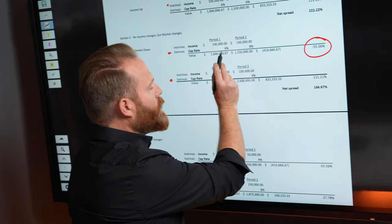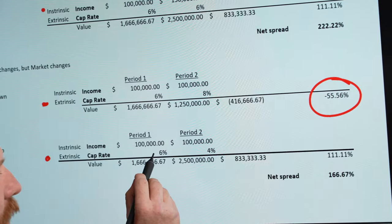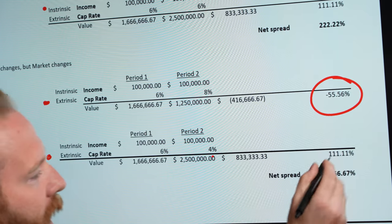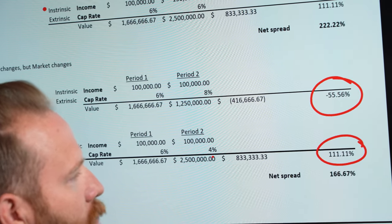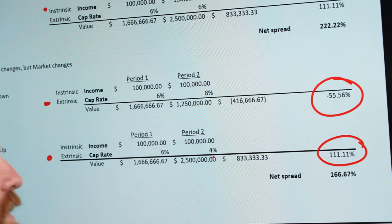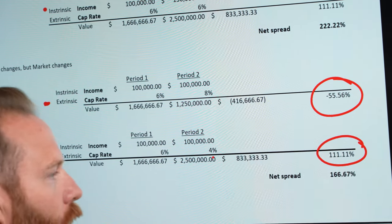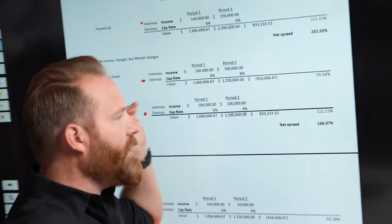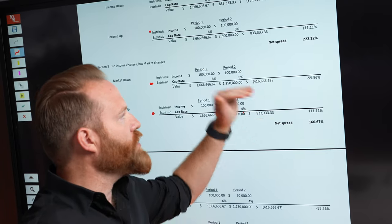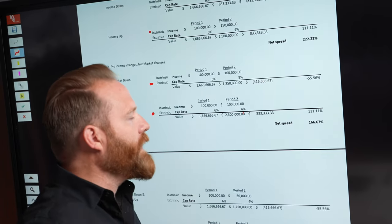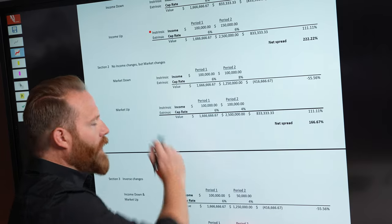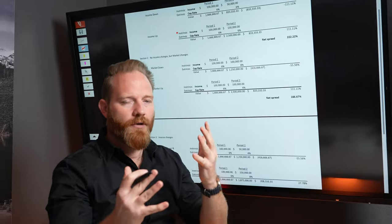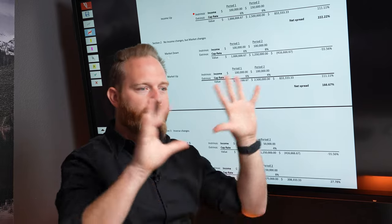So prices go up, cap rates go down at the same level, except inverse 6 to 4. So you went from a 6 cap to an 8 cap, and then a 6 cap to a 4 cap on this one. That is 111%. Now what's interesting, what you should notice here, all things being equal, is that the effect of the cap rate change or the market change is not equal where the effect of the income change is. I know this is a lot of numbers, and you're like, okay, AJ, I'm starting to get this. Just bear with me for a minute.